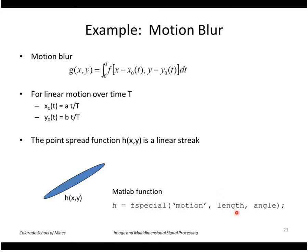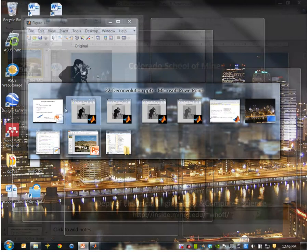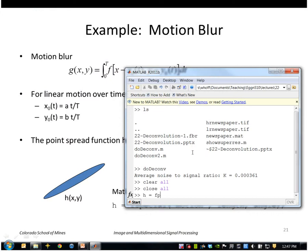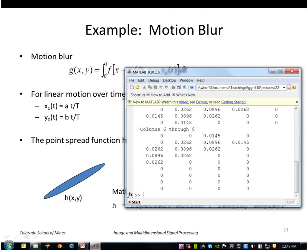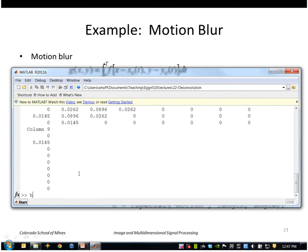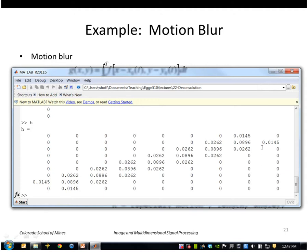MATLAB has a function that will generate this type of point spread function if you provide a length in pixels and an angle. So if I provide a length of, I don't know, 10 and an angle of 45, I get a function that looks like this. Let me spread it out a little bit more so as you can see it is a streak at an angle of 45 degrees, pretty narrowly concentrated around that diagonal line here.